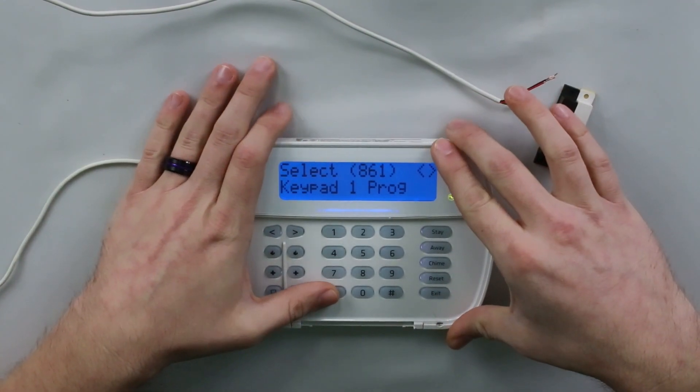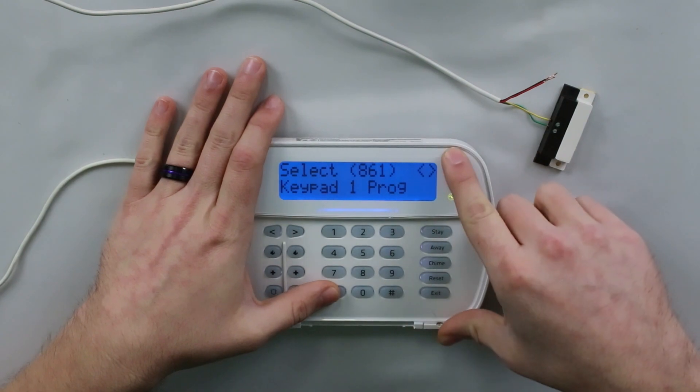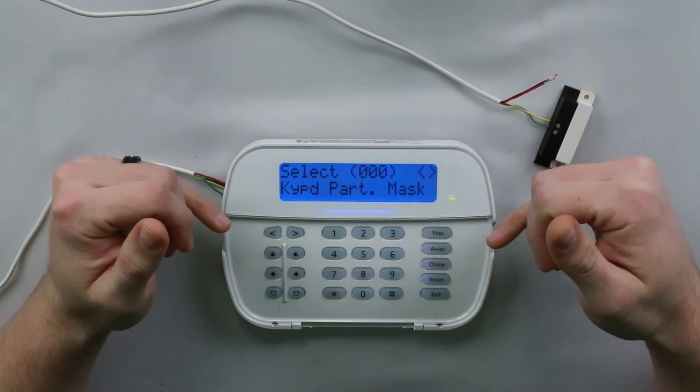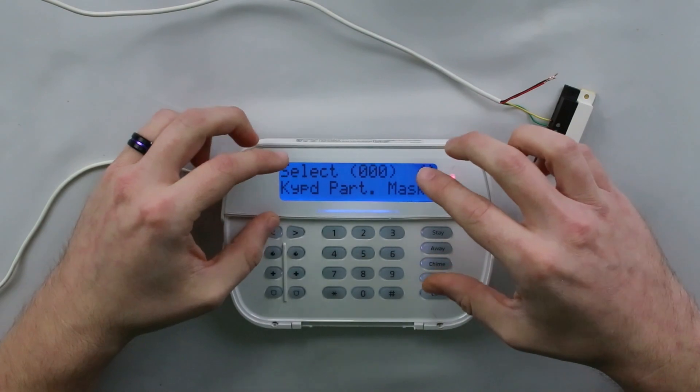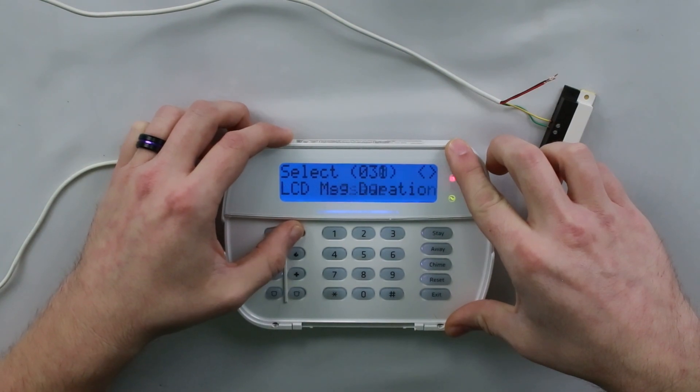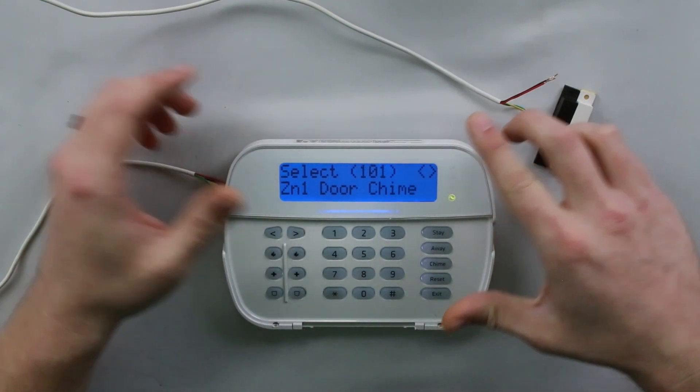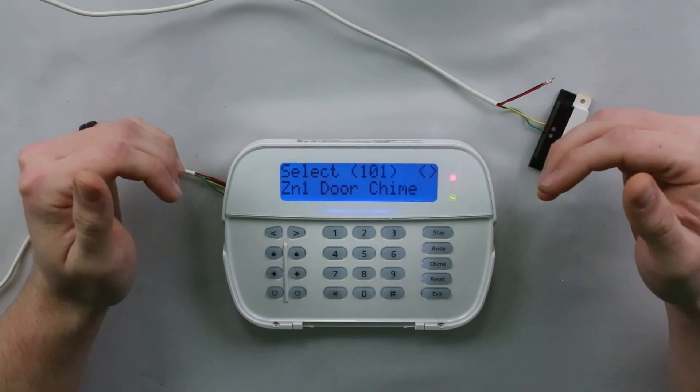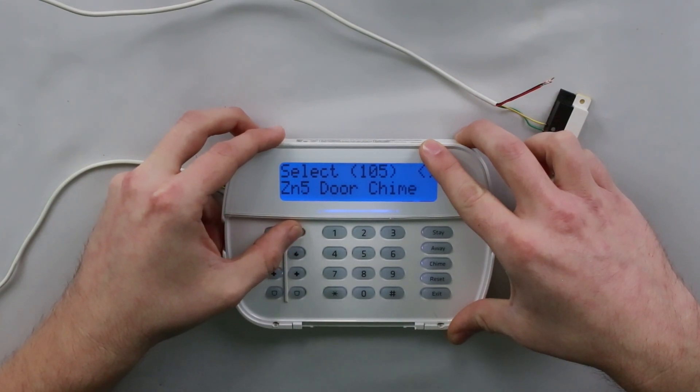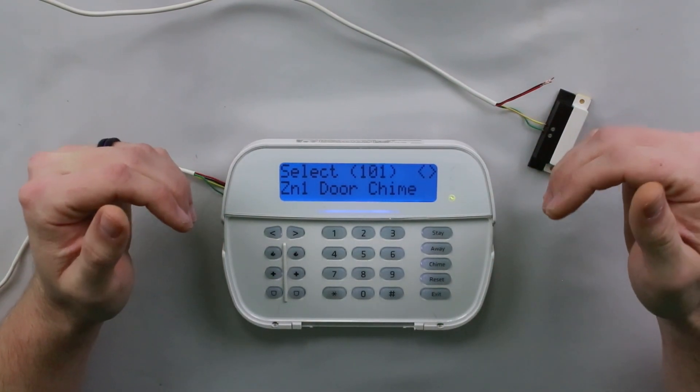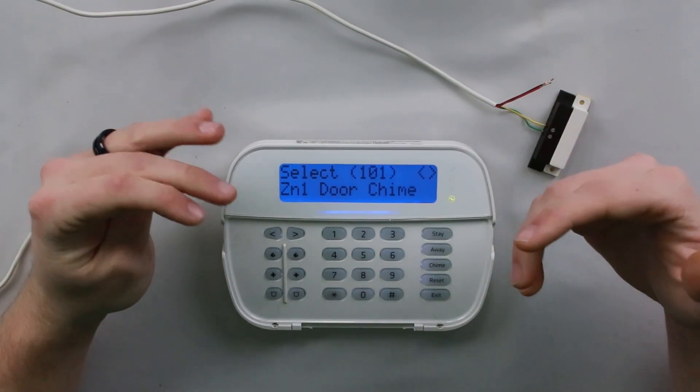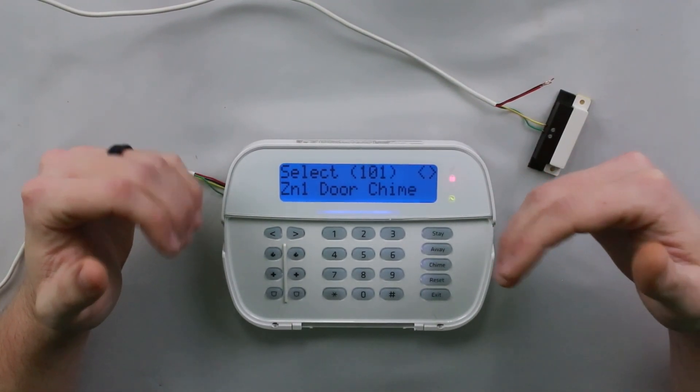We're programming keypad one. So scroll to eight six one, hit star. And there's going to be a lot of options in here. I've done another video on how to actually go through all of these different options for the keypad programming, but we're just focused on chime today. So we're going to skip past most of this. You actually just scroll right until you get to section one zero one. Once you get here, you will see that it says zone one door chime.